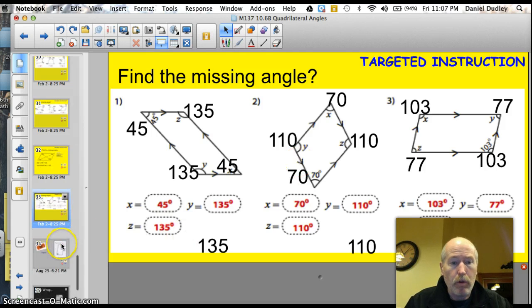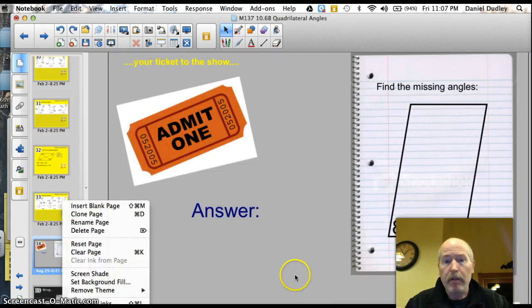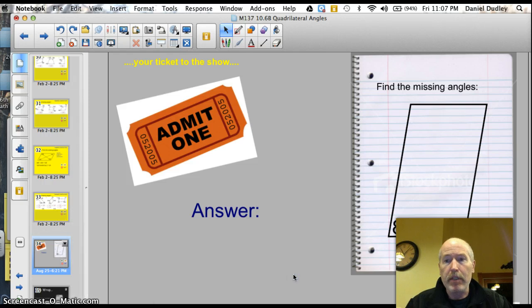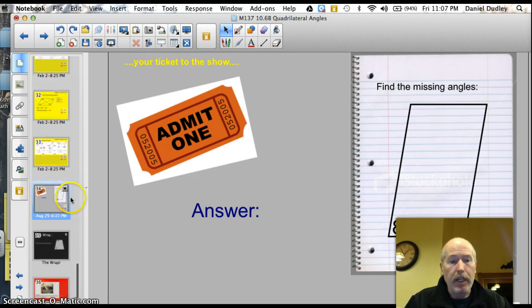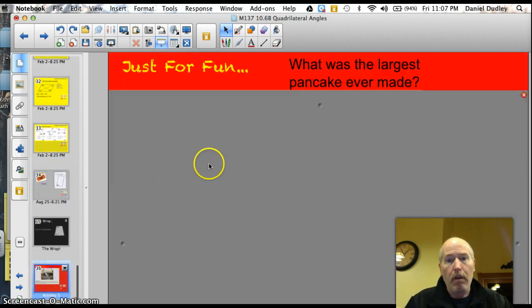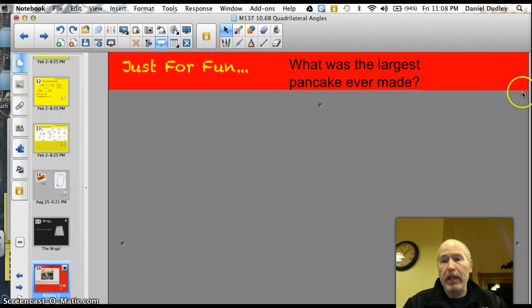Alright? Here we go. Here's your ticket to the show, and then I'll get to the world's largest pancake. There you go. Find the missing angles. Just one of them given, but it's a parallelogram. Alright. Here's the ticket to the show. I'm sorry. Here's the trivia question. Largest pancake ever made? Check it out.